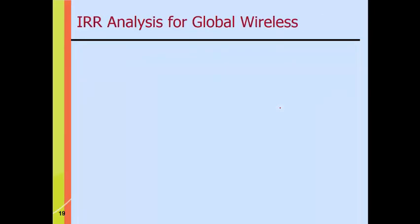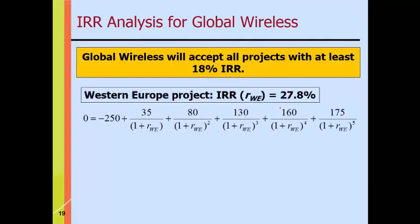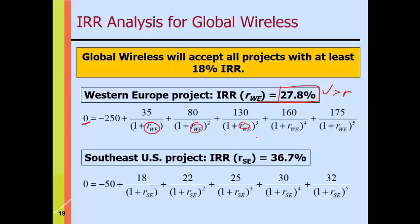Let's do the IRR analysis for Global Wireless, whose hurdle rate is 18%. Setting NPV to zero and solving for R, the Western Europe project yields an IRR of 28% — about 10 points above the hurdle rate, a strong win. The Southeast U.S. project has an IRR of 36.7% — way above the required rate. Both IRR results agree with the NPV analysis: both projects had positive NPVs, so both have IRRs exceeding the threshold. The only question is whether Global Wireless can afford to fund both.